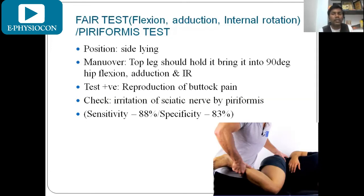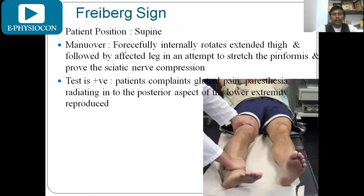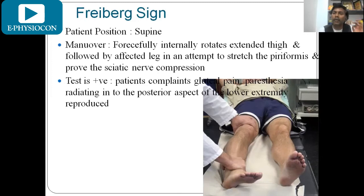Another test is the Freiberg sign. The patient lies in supine position; we passively internally rotate and extend the thigh in an attempt to stretch the piriformis. This is again a provocating test — the patient feels pain going from the buttock down the posterior thigh, down the leg and to the sole. This running-down pain response confirms the diagnosis. Both the FAIR test and Freiberg sign are clinically helpful to differentiate from discogenic sciatica.